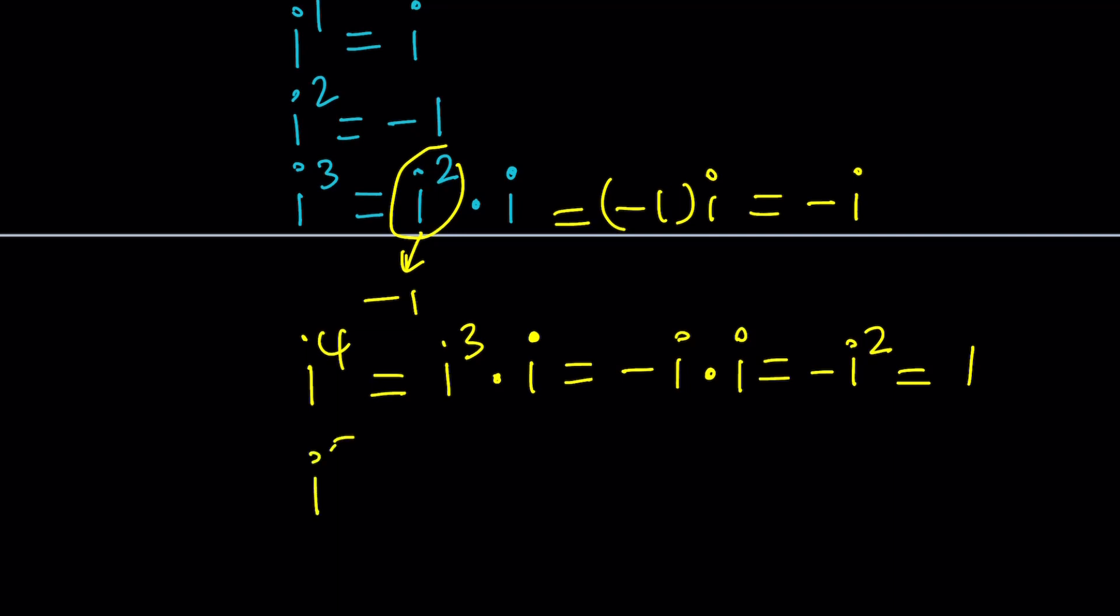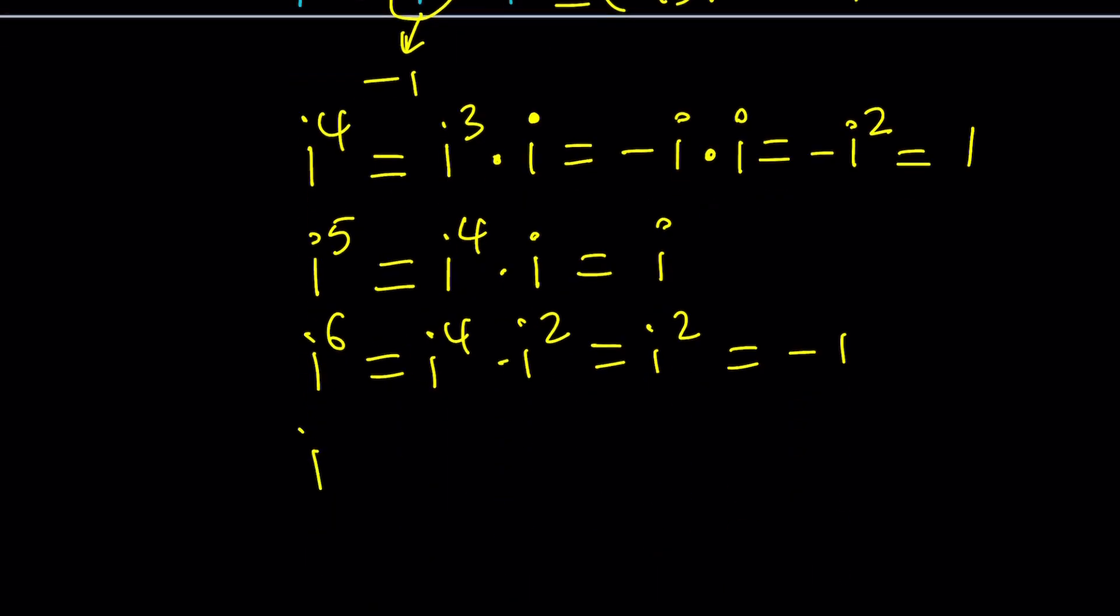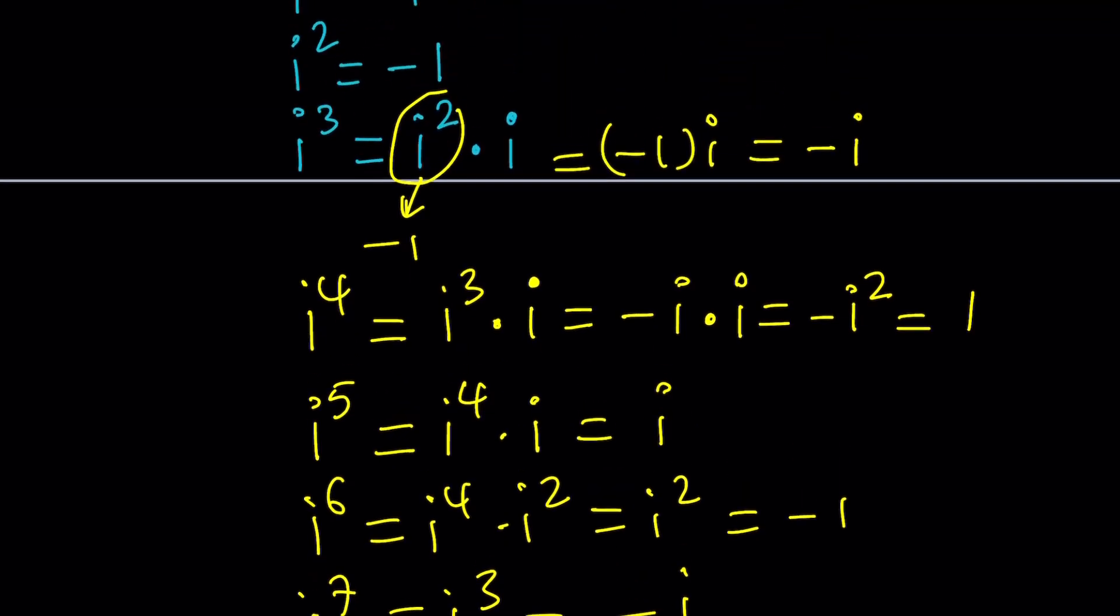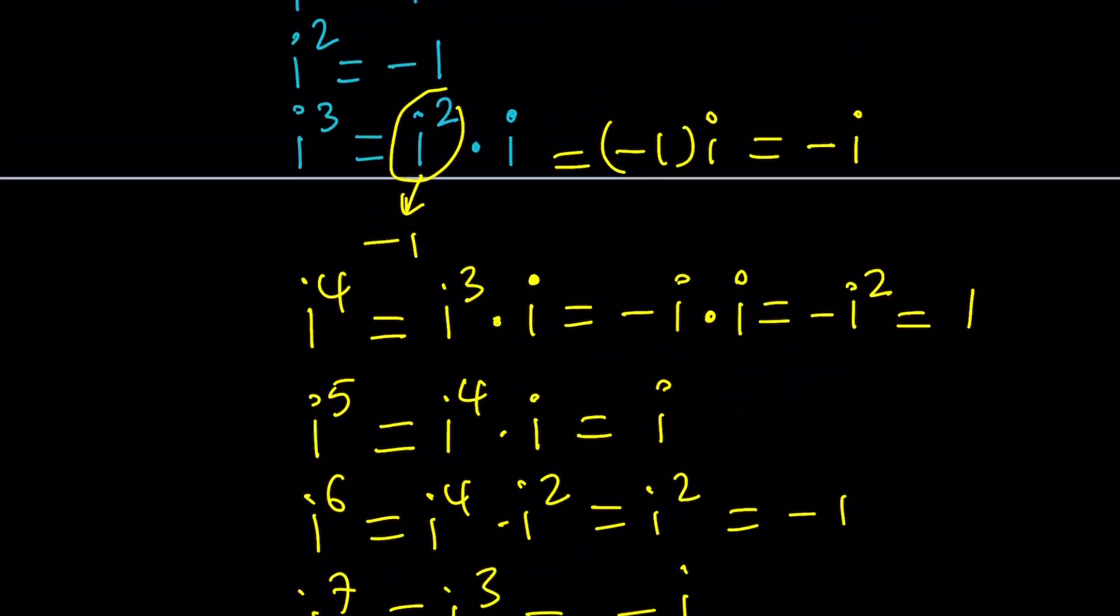What happens to i to the fifth? Well, the rest is easy, because you're going to get into a cycle. i to the fifth is i to the fourth times i to the first, which is the same as i to the first. And then i to the sixth is i to the fourth times i squared, which is the same as i squared, which is negative one. So it's just going to repeat. i to the seventh is going to be i to the third, which is negative i. And then i to the eighth is just going to be i to the fourth squared which is one. Oh, by the way, I forgot to tell you to evaluate i to the fourth, we could also use i squared squared, which also gives us the same thing. So you could also write this as i squared squared, but i squared is negative one and negative one squared is positive one. So no matter how you do it, i to the fourth power equals one.